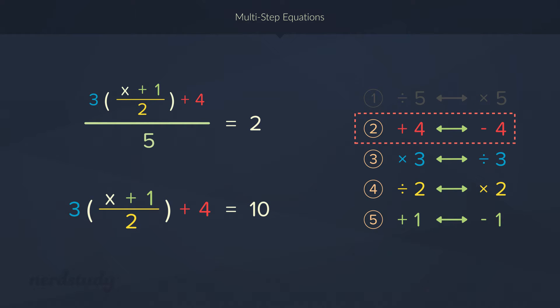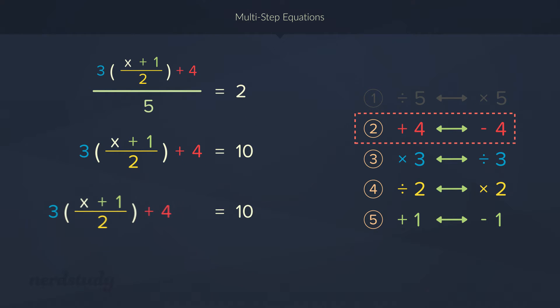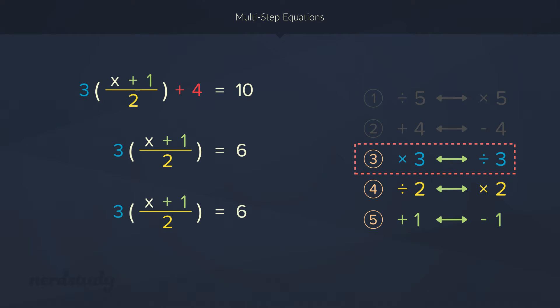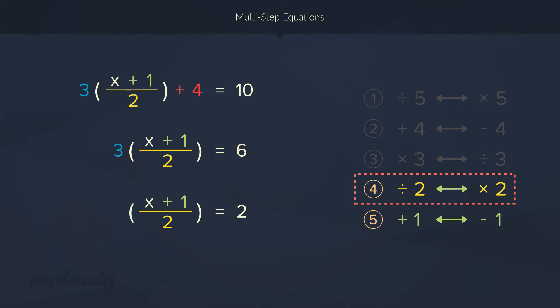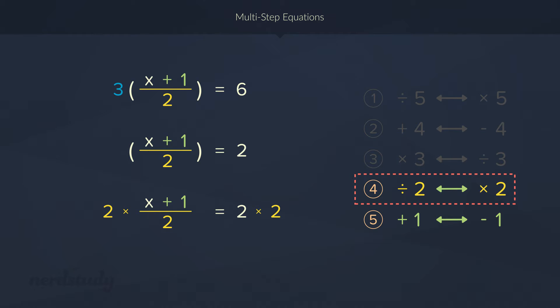Next, let's deal with the addition of 4 by subtracting by 4. So, left side gets rid of the addition of 4 and the right side becomes 6. For the multiplication of 3, its inverse would be to divide by 3. All right. What's next? Multiply both sides by 2. So, we get x plus 1 on the left side and 4 on the right side.